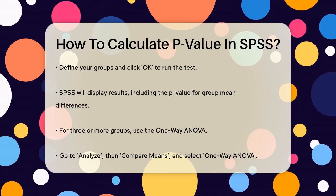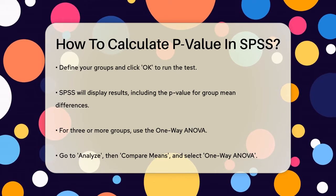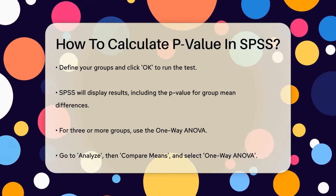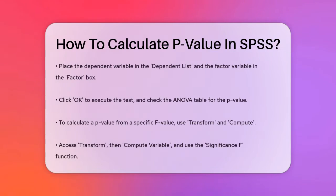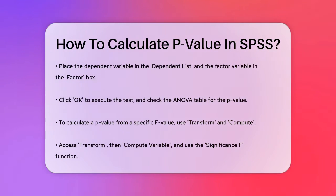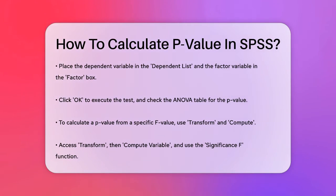Place your dependent variable in the Dependent list and your factor variable in the factor box. Click OK to run the test, and the output will include the ANOVA table with the p-value, indicating if there are significant differences between the group means.